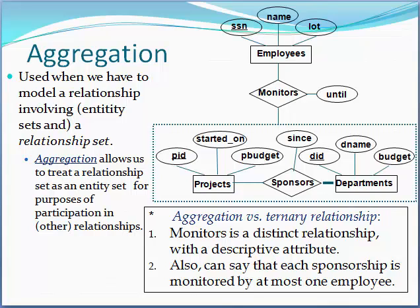Aggregation is used when we have to model a relationship involving an entity set and a relationship set. Aggregation allows us to treat a relationship set as an entity set for the purpose of participation in other relationships. For example, the relationship 'monitors' is a distinct relationship with a descriptive attribute, meaning each sponsorship is monitored by at most one employee.